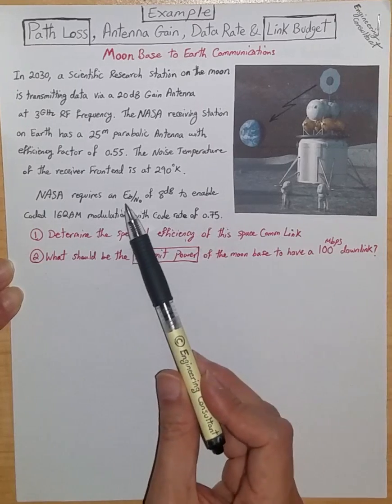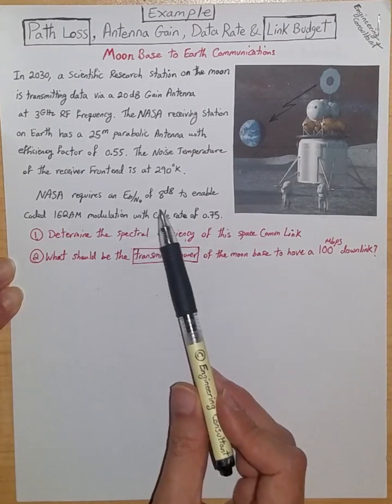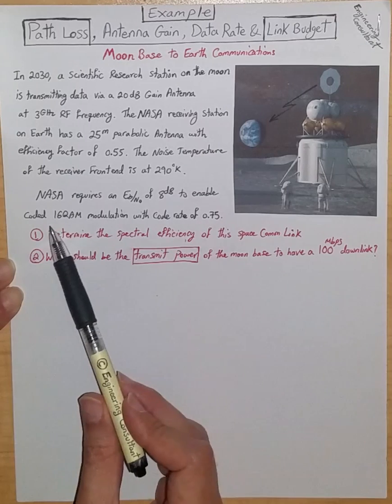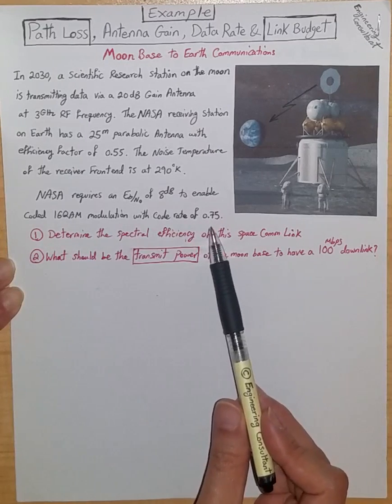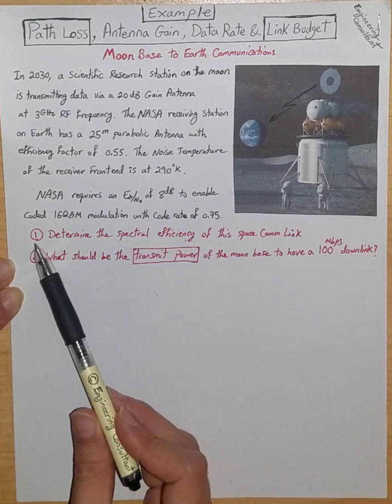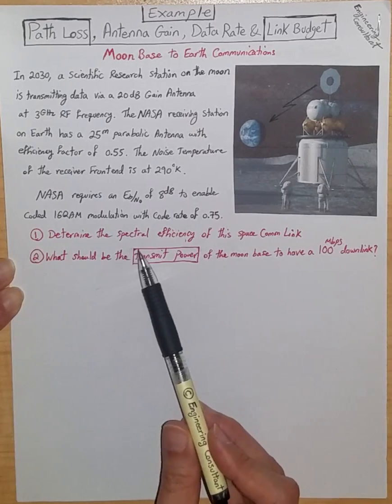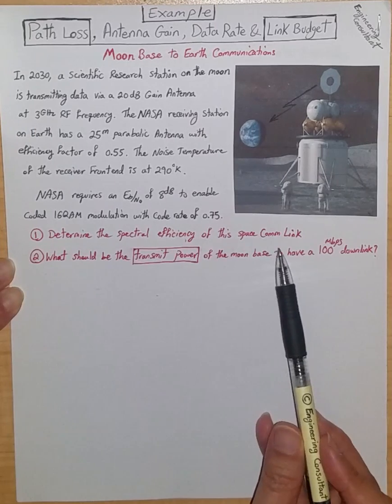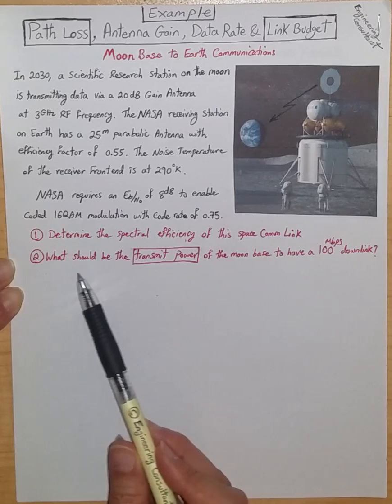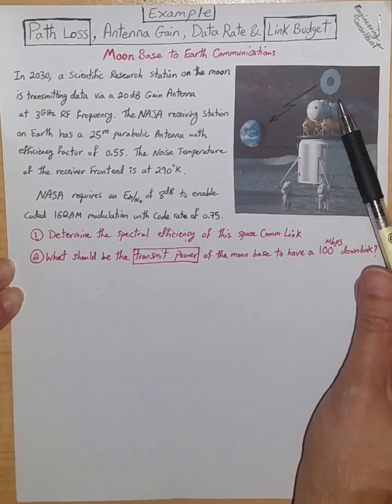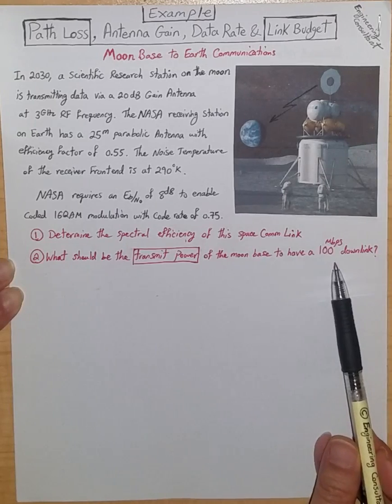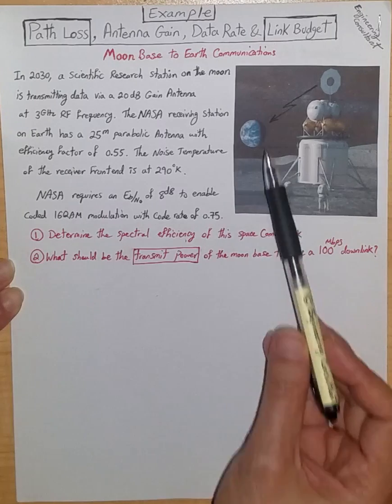NASA requires an Eb over N0 of 8 dB to enable coded 16-QAM modulation with code rate of 0.75. Question 1: Determine the spectral efficiency of this space communication link. Question 2: What should be the transmit power of the moon base to have a 100 megabit per second downlink communication to Earth?